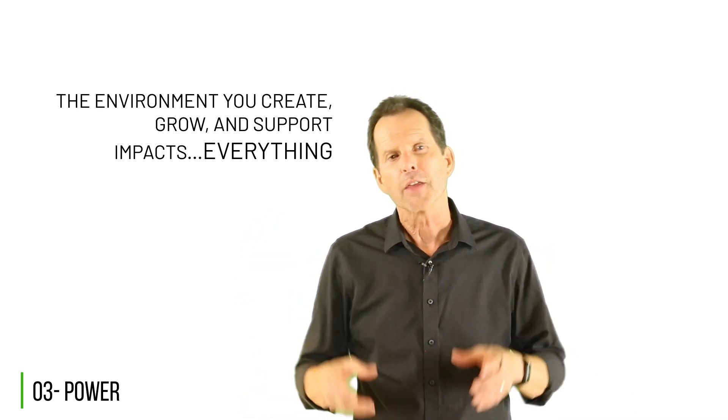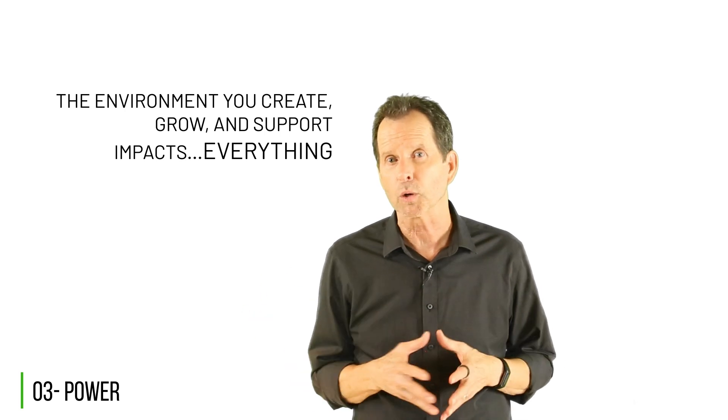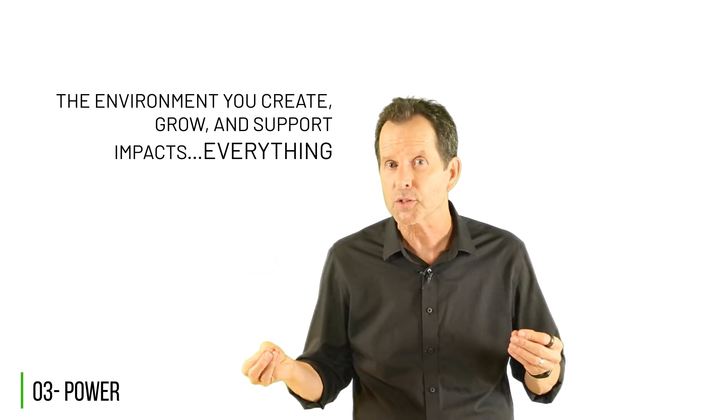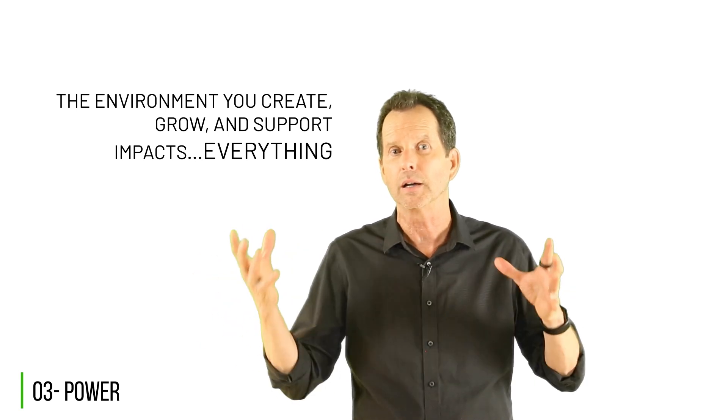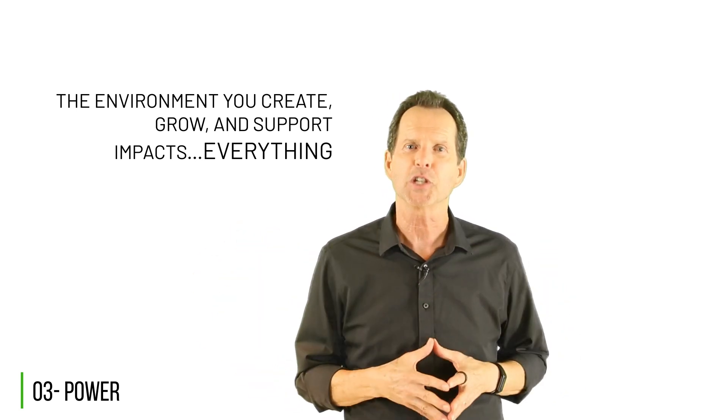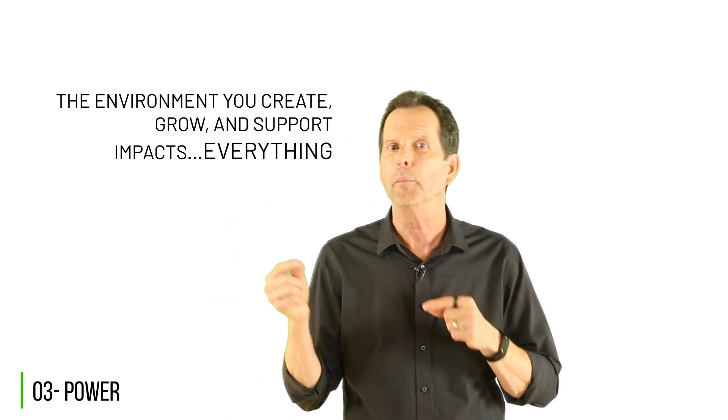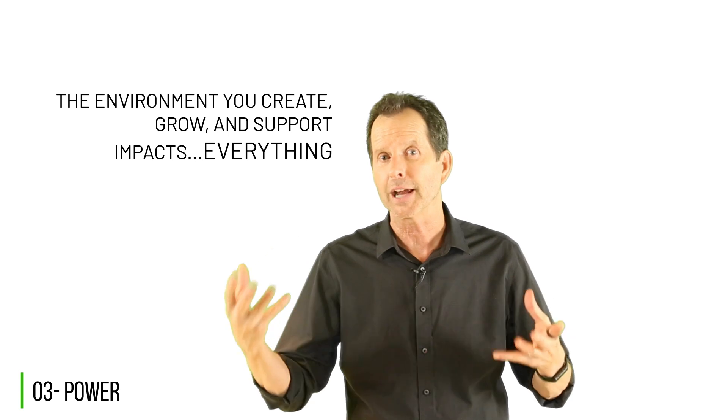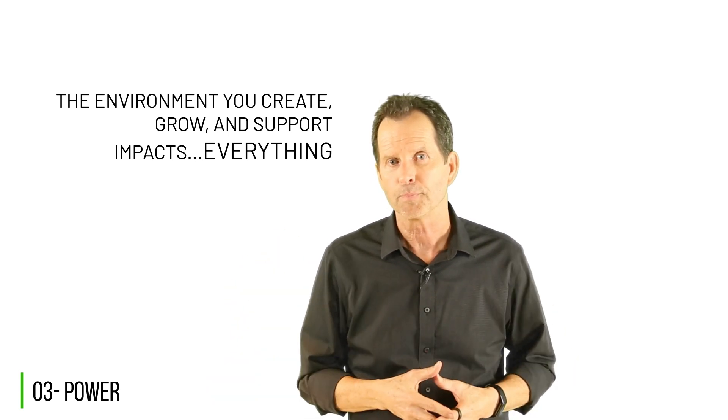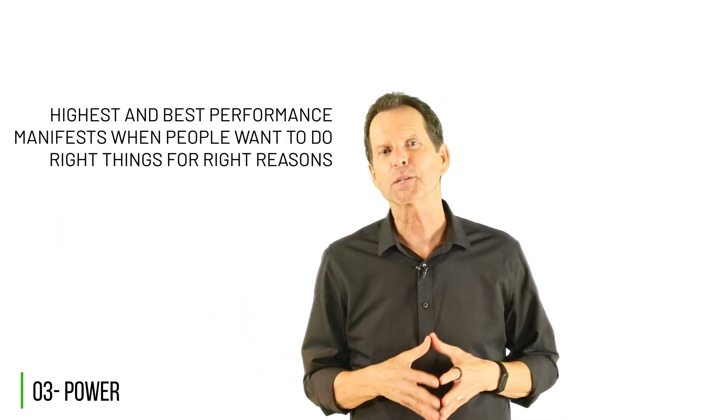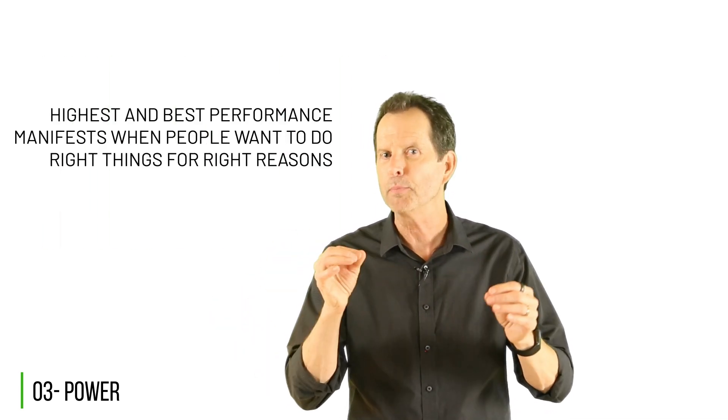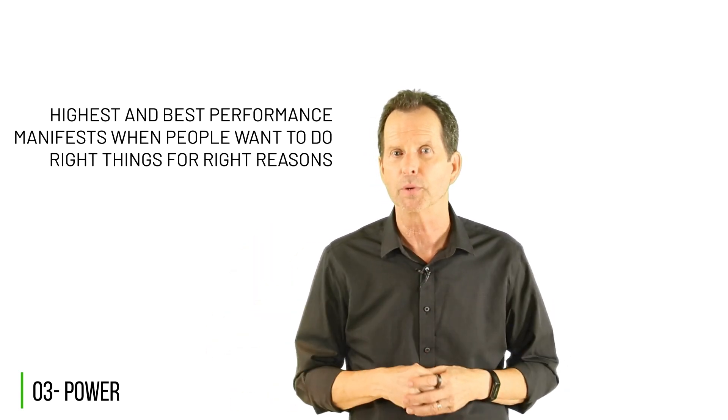In conclusion, the most empowering environment for any family, team, or organization is one that maximizes the attitudes, contributions, and well-being of its members. This is achieved through a distribution of power that minimizes external controls while maximizing opportunities to develop and exercise self-control. Such an environment is where those involved will do right things for right reasons in right ways, even when no one's watching. What's the overall outcome? Highest and best performance manifests when people want to do right things for right reasons.